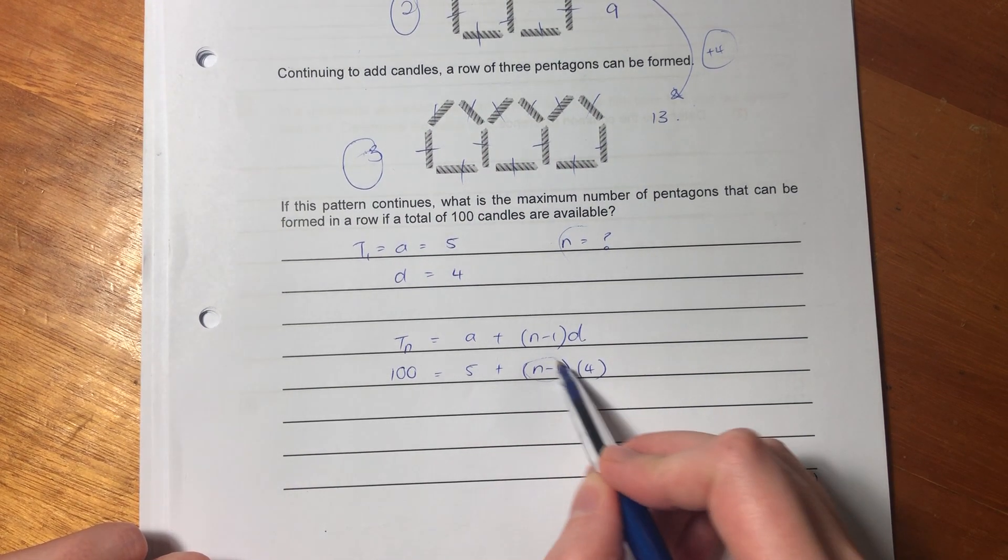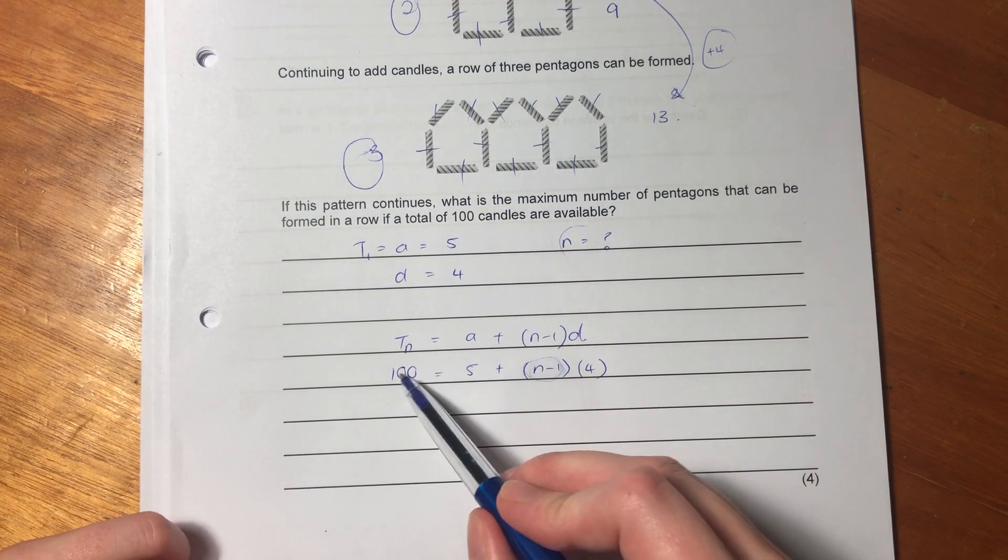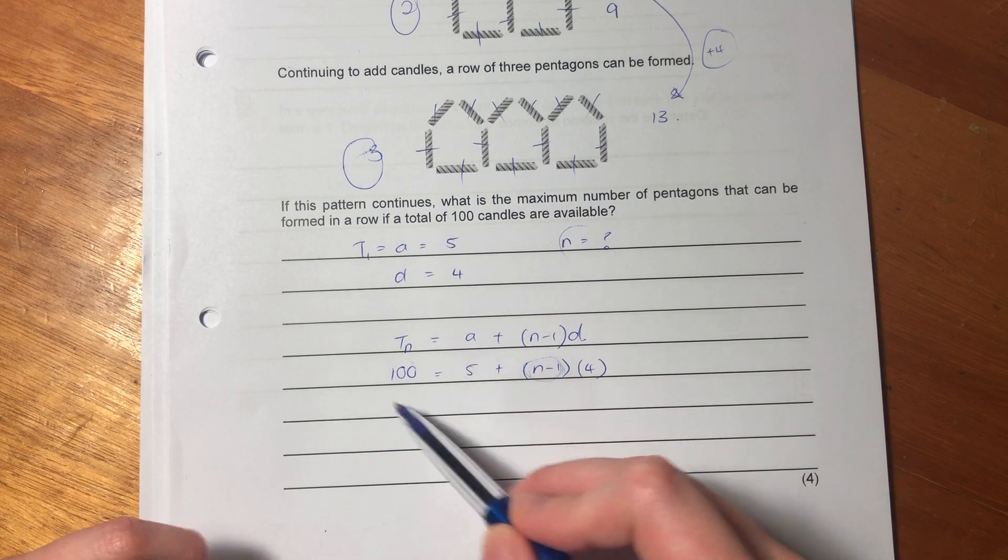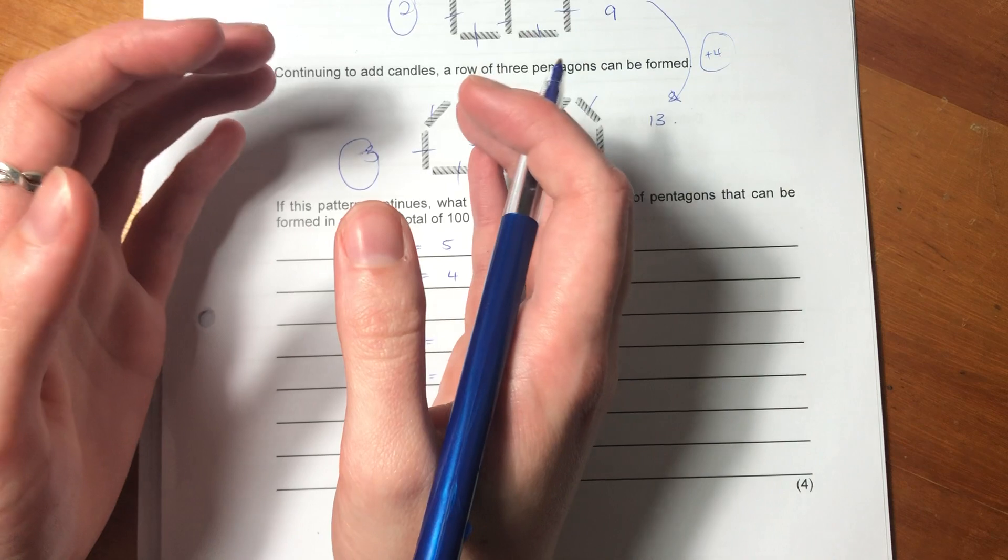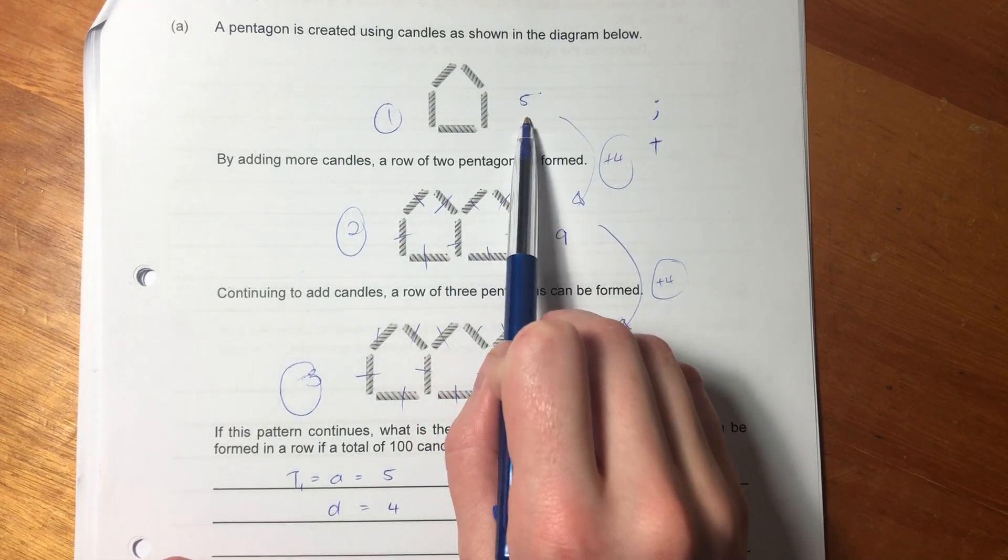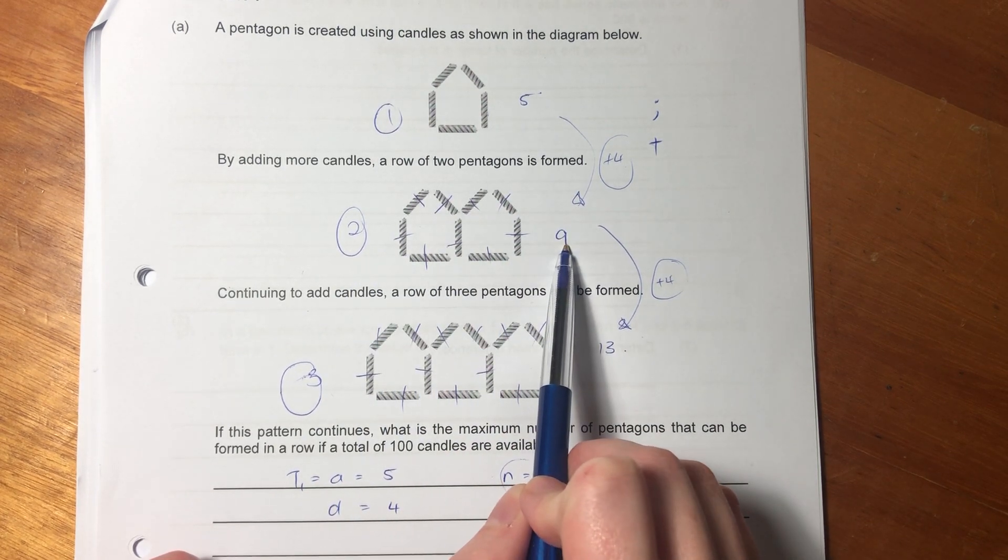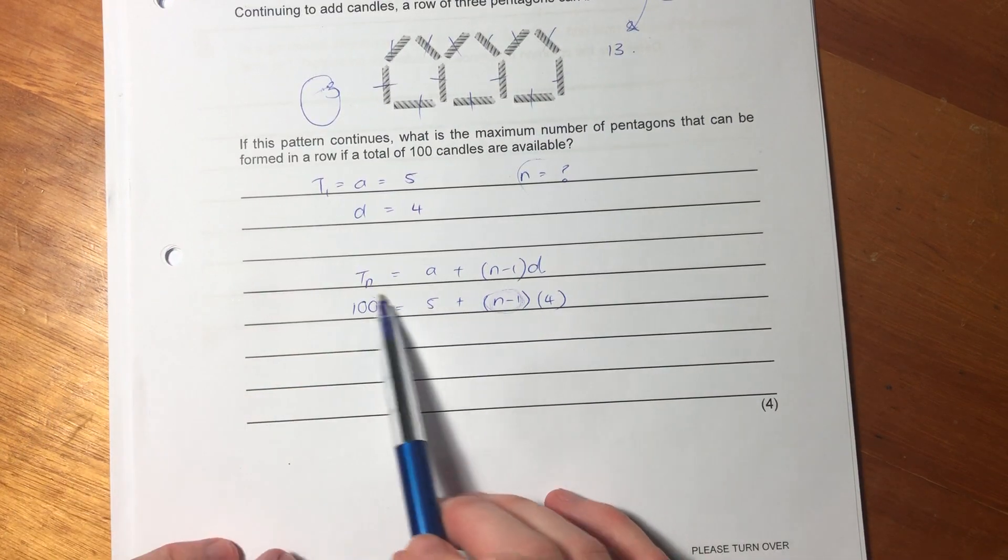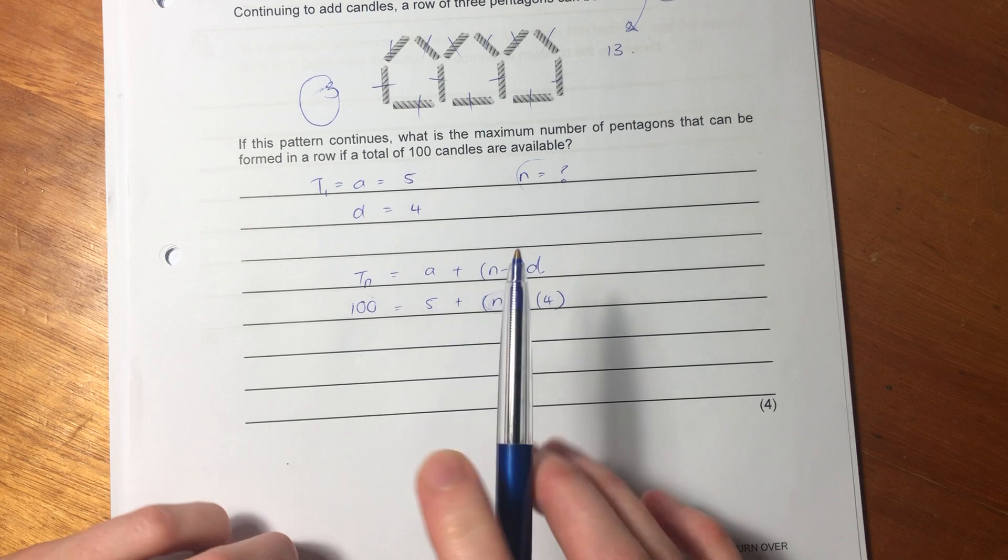But N is this number of the term. And it might be a little bit confusing because the term, this doesn't equal like three or four or anything like that, but N can equal three or four. So it's important to distinguish between the value of the term and the number of the term. Here, the value of the term is five, but it's the first term. Here, the value of the term is nine, but it's the second term. Here, the value of the term is 100, but we're trying to find out what number it is.